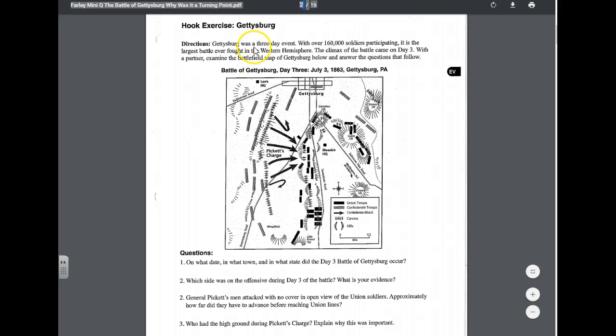Gettysburg was a three-day event with over 160,000 soldiers participating. It is the largest battle ever fought in the Western Hemisphere. The climax of the battle came on day three, where the partner examined the battlefield map below of Gettysburg and answered the questions that followed.